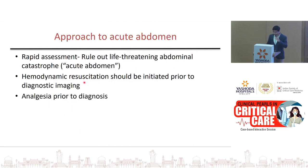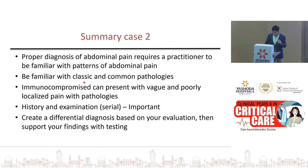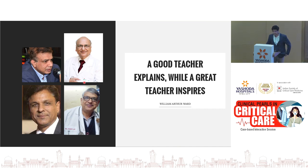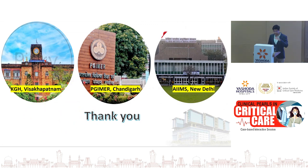To conclude: approach to any acute abdomen — do a rapid assessment, rule out life-threatening abdominal catastrophe, and perform hemodynamic resuscitation prior to making a definitive diagnosis. Do not withhold analgesia while waiting for diagnosis; give it as soon as the patient arrives to keep them comfortable. A proper diagnosis of abdominal pain requires familiarity with patterns of abdominal pain and classic pathologies. Immunocompromised patients may not present typically and can have vague, poorly localized pain. Serial examination is very important, and create a differential diagnosis before supporting your findings with testing.